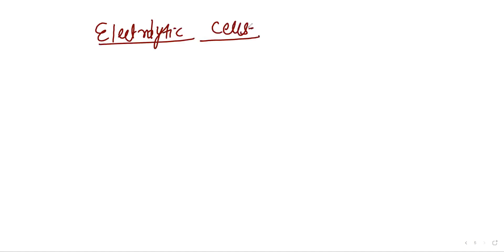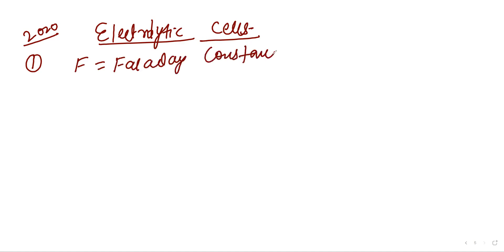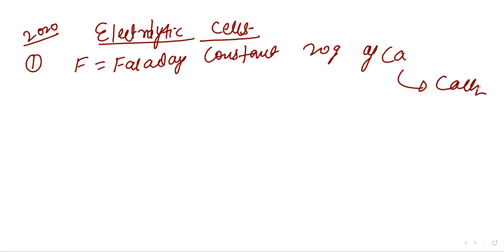We will now solve numericals of electrochemistry based on electrolytic cells. The first question, asked in 2020: the number of Faradays required to produce 20 grams of calcium from molten calcium chloride (CaCl₂). The atomic mass of calcium is given as 40.